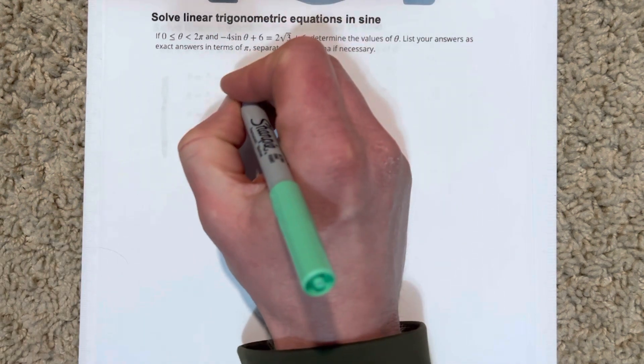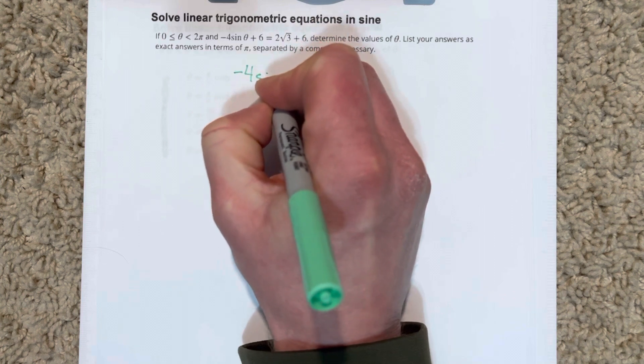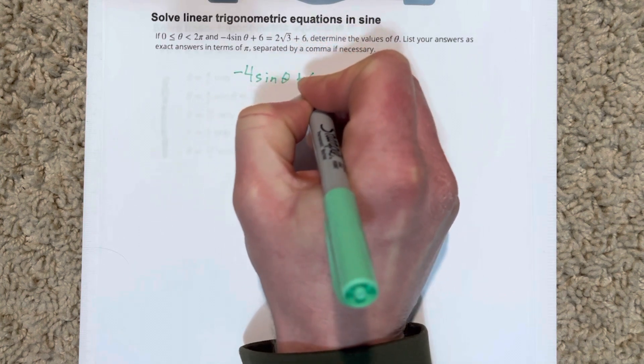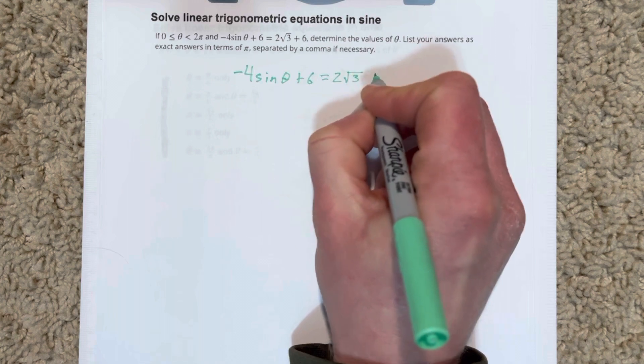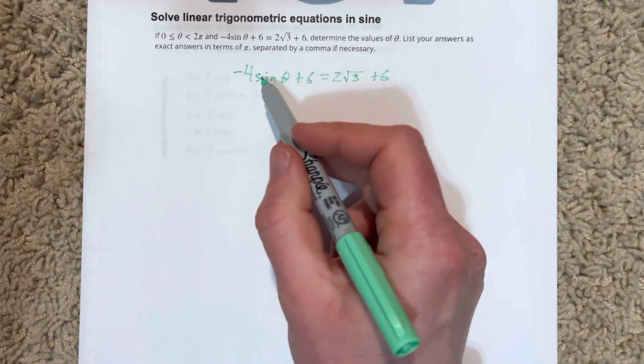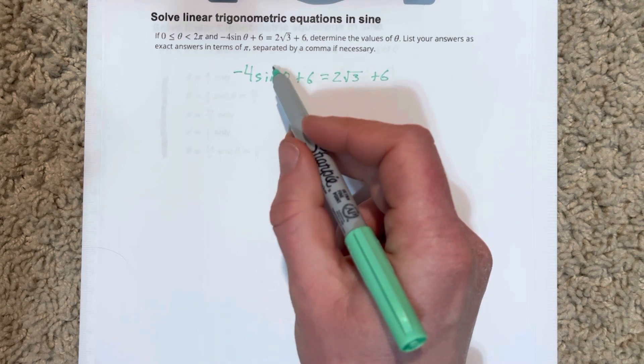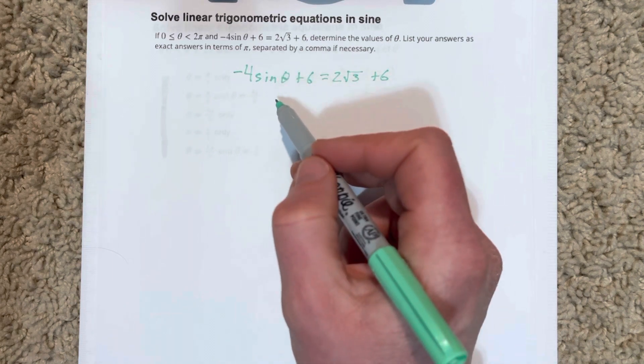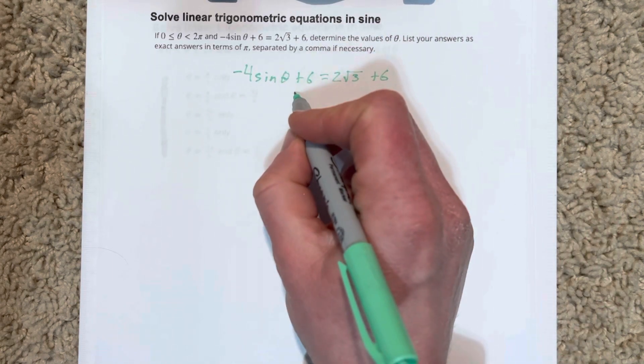We're going to write out the equation: -4sin(θ) + 6 = 2√3 + 6. What we're going to do is basically treat sin(θ) as x. So we're just going to pretend that there's an x here, and we're going to do the same algebra steps we would do on a normal problem.